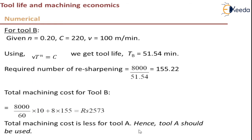Applying the same equations for Tool B, we get tool life T_B = 51.54 minutes, requiring 155 resharpenings — compared to 105 for Tool A. Since each resharpening costs 8 rupees (much higher than Tool A's 2 rupees), the total cost for Tool B is 2,573 rupees, which is much higher than Tool A's 2,210 rupees. Hence, Tool A should be used.